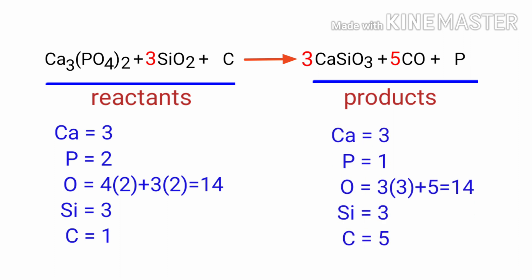The oxygen atoms are balanced. Now we need to balance the phosphorus and carbon atoms. To do this, we need to put a coefficient of 2 in front of P, and a coefficient of 5 in front of C.